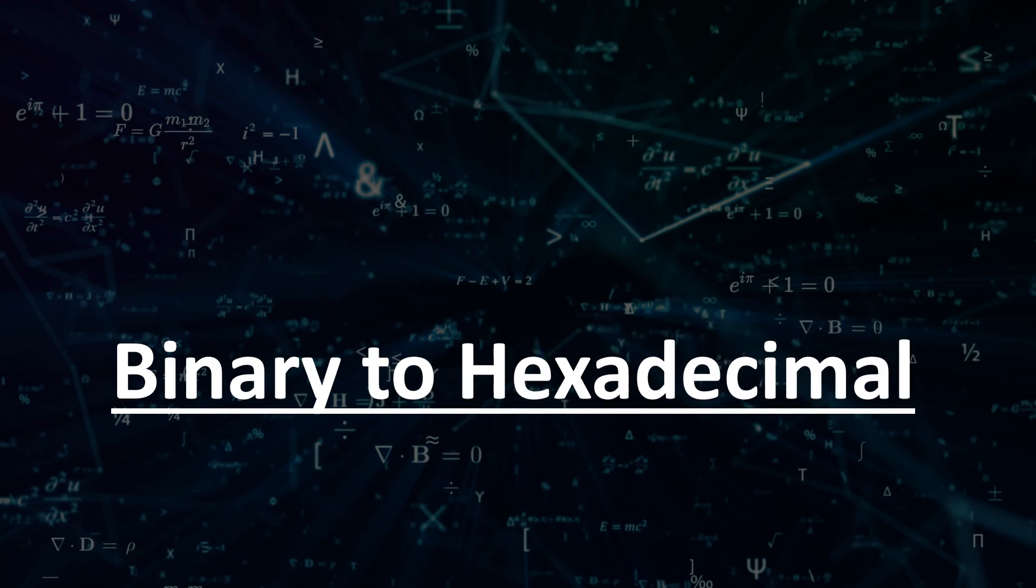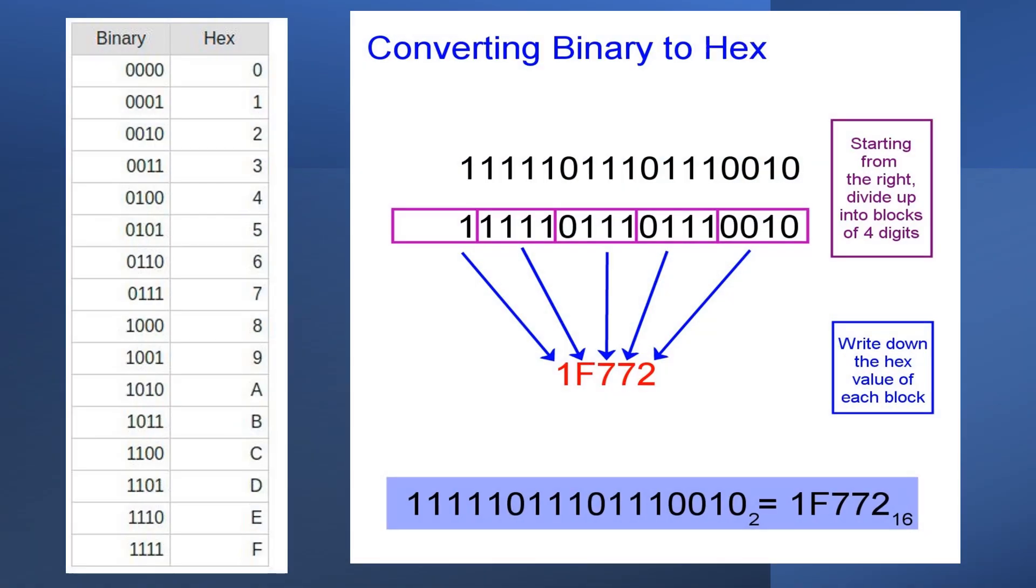Converting binary to hexadecimal. Group all binary bits to 4 digits starting from right side. Write down the hexadecimal value of each block according to the table.